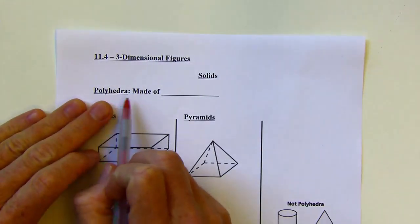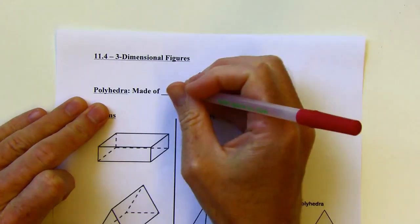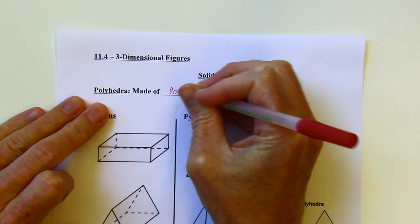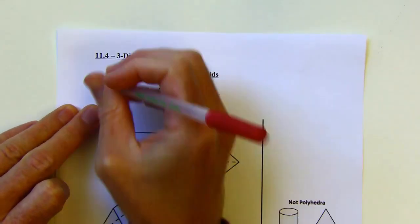So a polyhedra is a solid figure that's made up of polygons. And by the way, the singular for that is polyhedron.